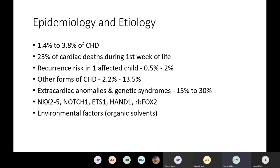HLHS makes up 1.4% to 3.8% of congenital heart disease. Despite this low incidence, HLHS causes 23% of cardiac deaths during the first week of life and 15% of cardiac deaths within the first month of life. While no gene abnormality is specific to this condition, there is strong evidence supporting a genetic etiology, because the recurrent risk in families with one affected child is 0.5% to 2%. The recurrent risk for other forms of congenital heart disease in families with one affected child with HLHS is 2.2% to 13.5%.